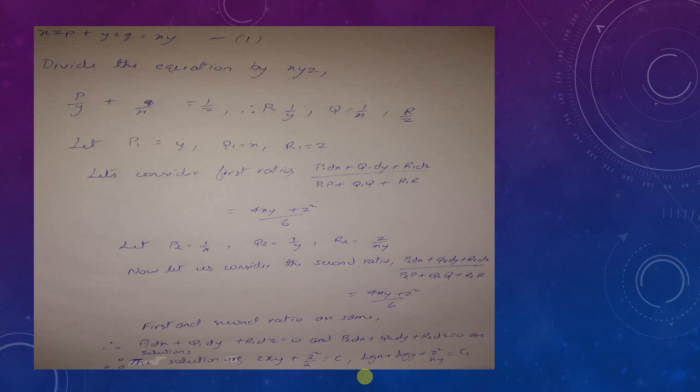Now let us look at an example. xz·p plus yz·q equals xy, which is equation 1. Dividing the equation by xyz gives p over y plus q over x equals 1 over z. Here capital P equals 1 over y, capital Q equals 1 over x, and capital R equals 1 over z.